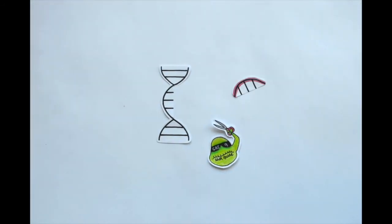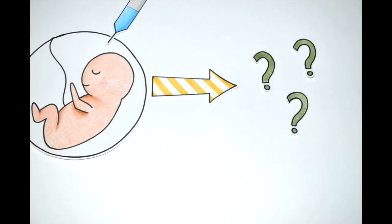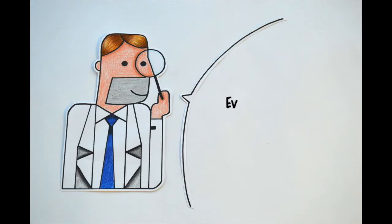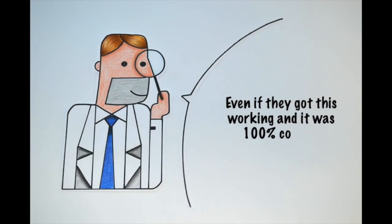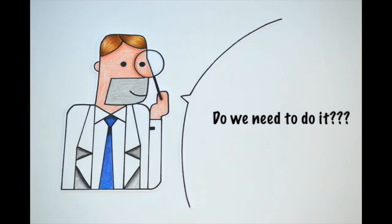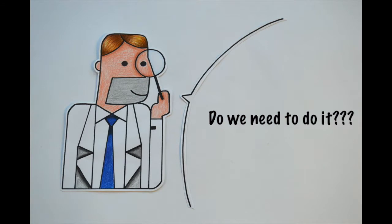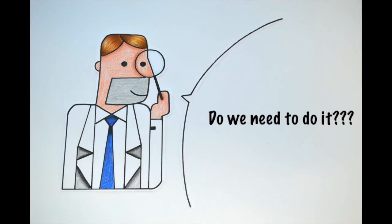We've just seen how easy it is for the editing process to go wrong, and that's dangerous because editing the embryo means editing every cell in the human it gives rise to. For his part, Paul is not convinced that editing embryos is necessary. Even if they got this working and it was 100% correct, do we need to do it?